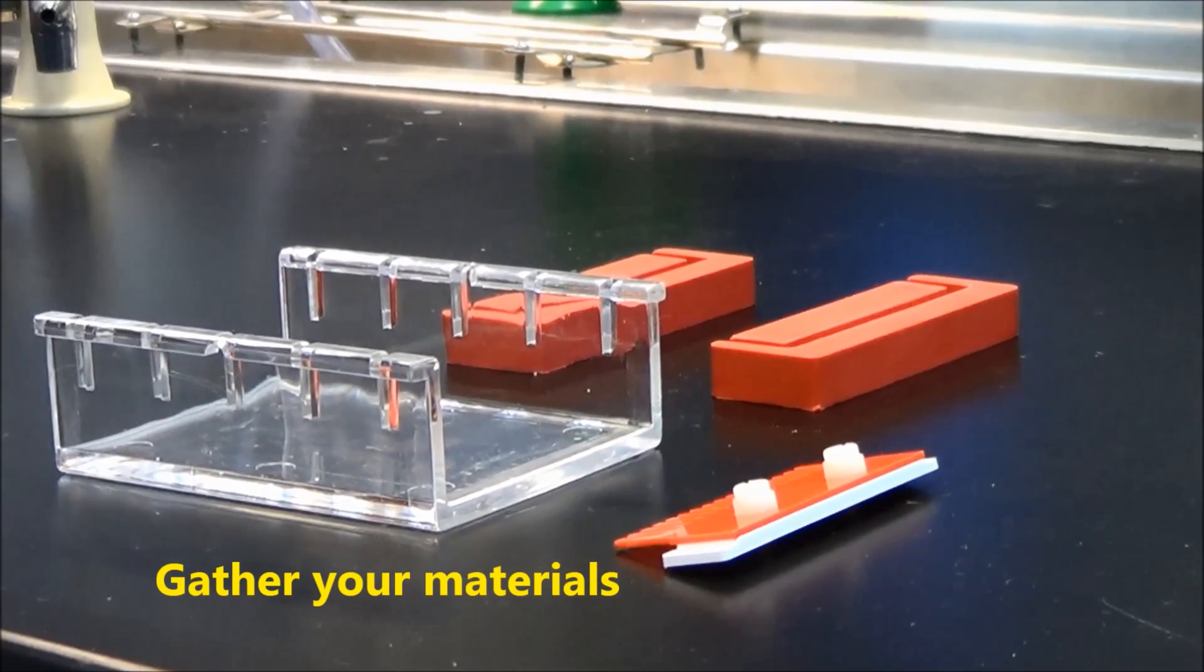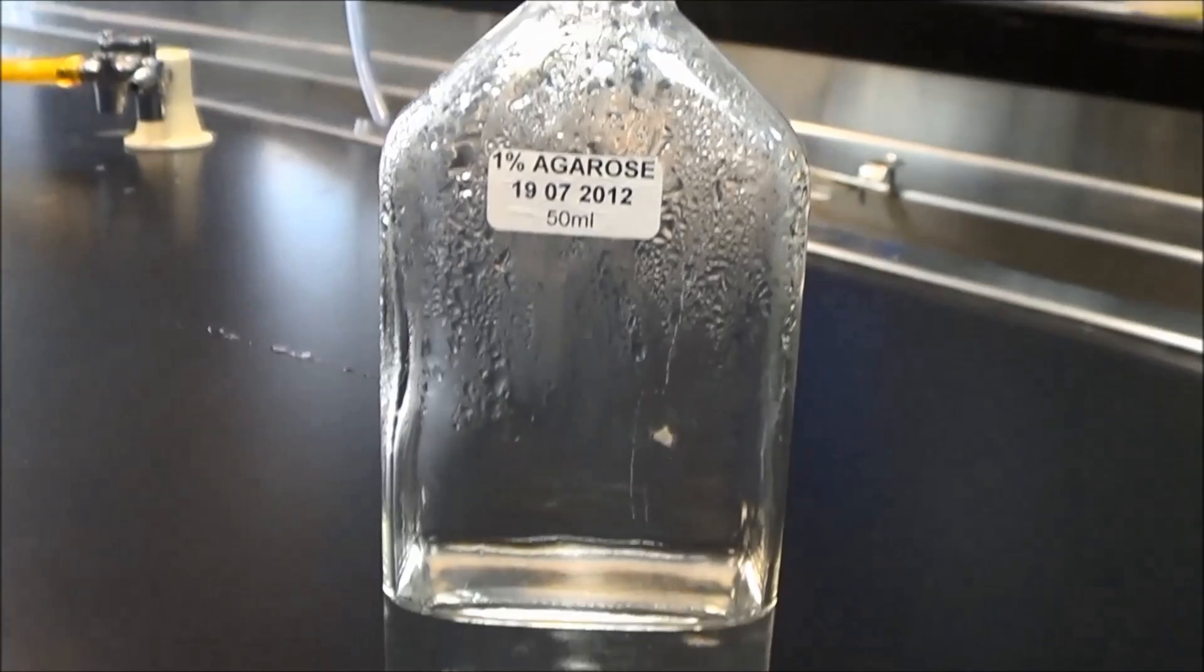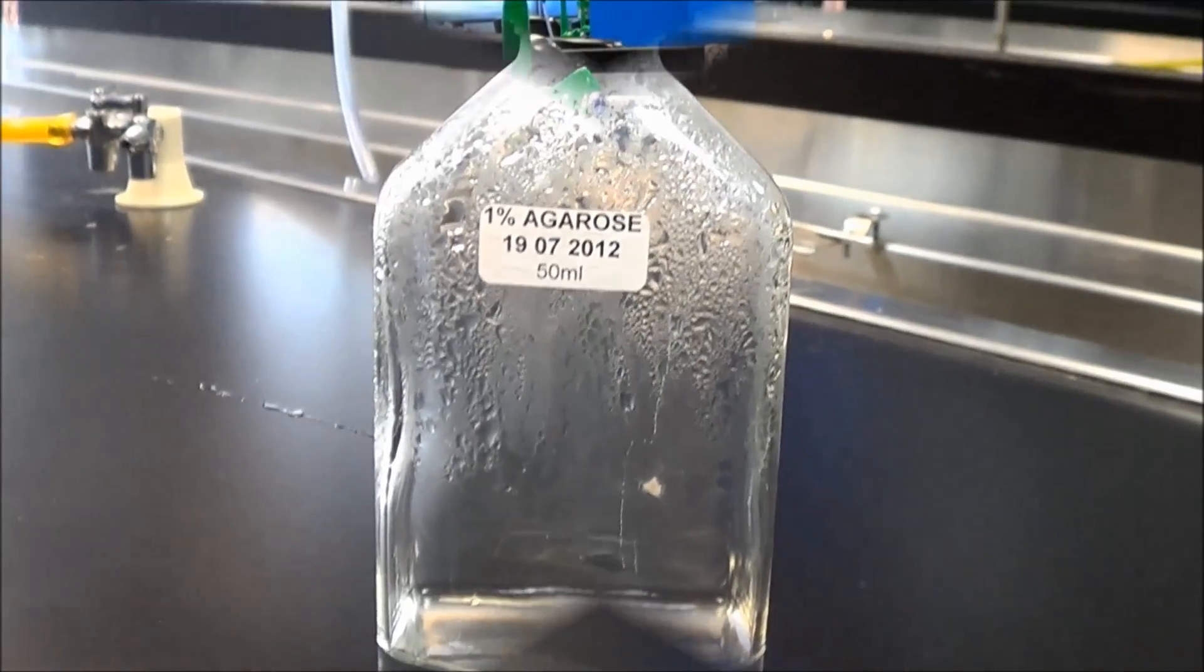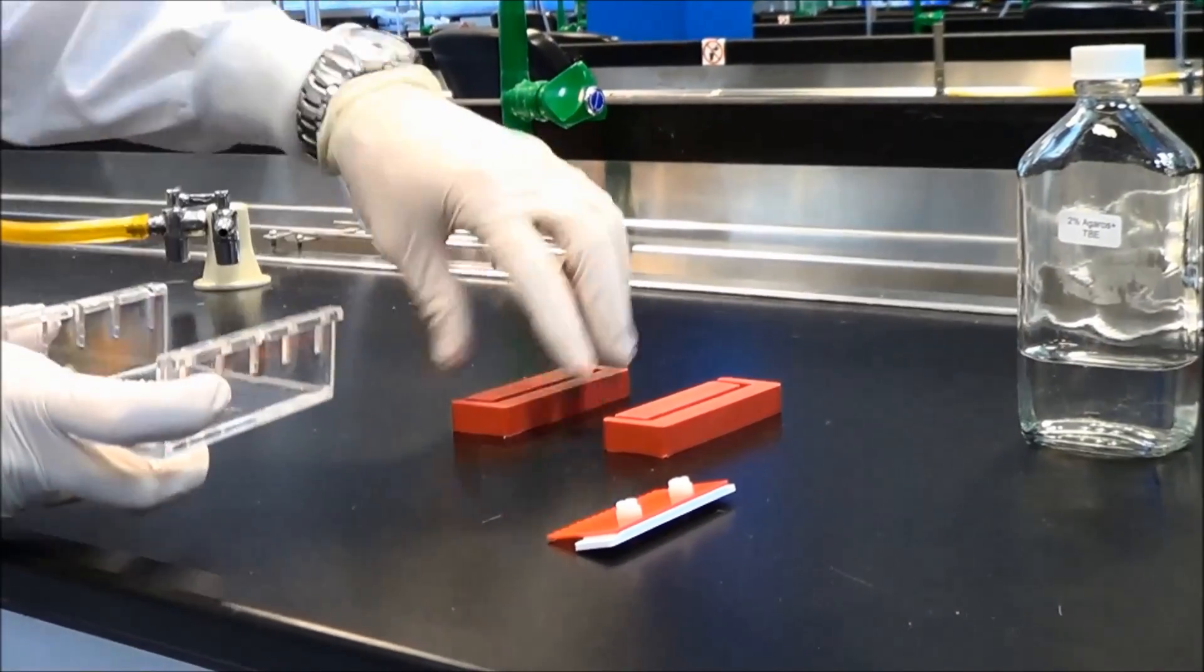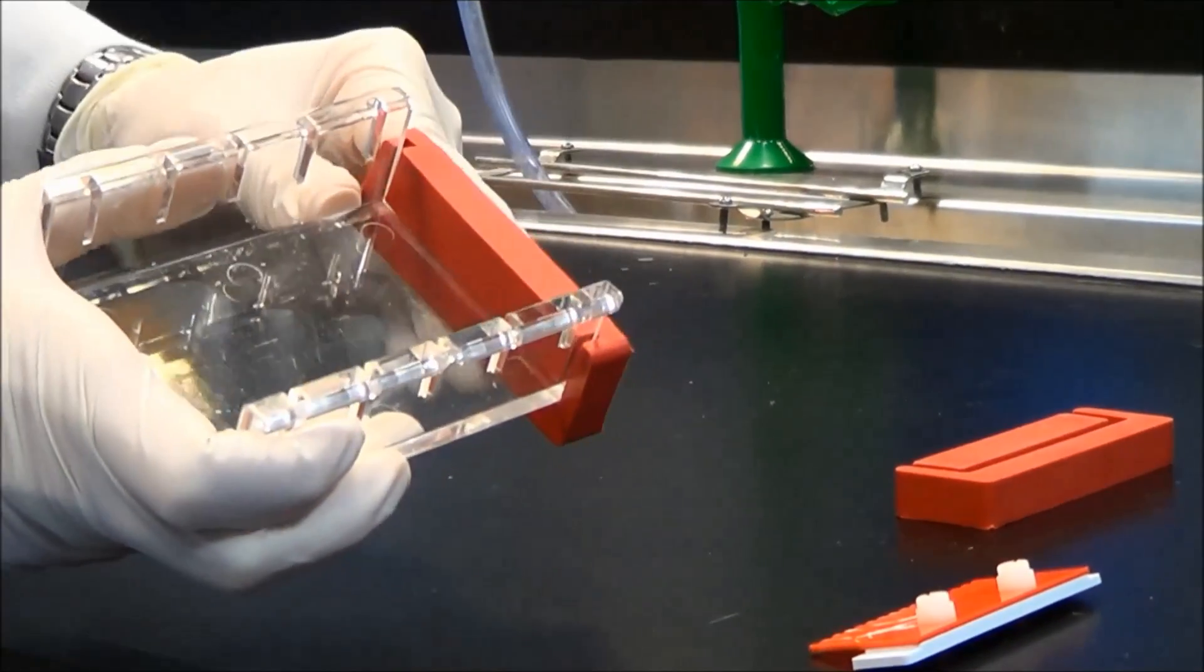Gel electrophoresis setup. To set up an electrophoresis gel you need to firstly gather the following materials as shown. Place the casting dams together like so and insert the comb as shown.